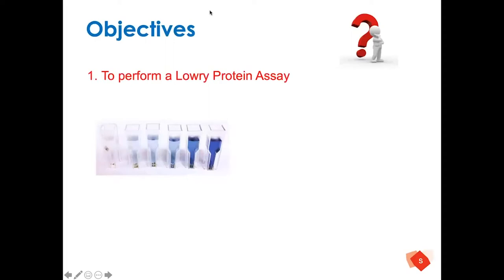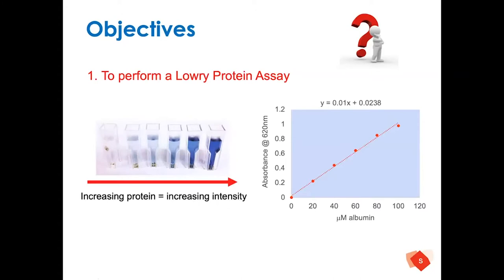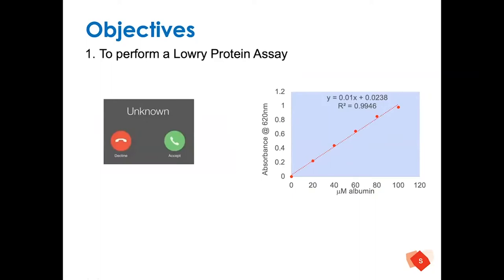Just as we did with the glucose, we're going to generate a standard curve. With increasing concentration of protein moving left to right, we'll get increasing colour intensity — that's what we would experience in the lab. We would then plot that out exactly the same as we did with the glucose assay. On the x-axis we put the concentration of albumin; on the y-axis we put the absorbance. So with increasing colour intensity it correlates to increasing albumin concentration. Then we come in with an unknown, and we determine that unknown concentration to be 0.5 absorbance units.